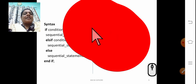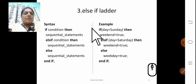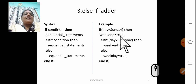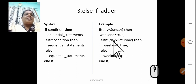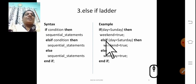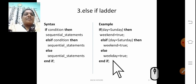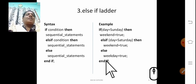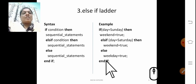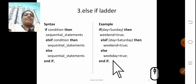If day is Saturday, the first condition (Sunday) is false, so those statements do not execute. It checks the next elsif — Saturday equals Saturday is true, so weekend equals true executes. The else clause does not execute. Control goes directly to end if, and the next statement executes.